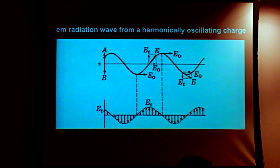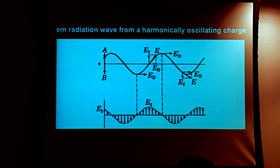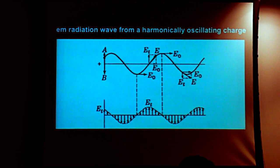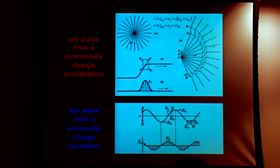If we consider not just a pulse of acceleration but an oscillation — which always involves acceleration, since acceleration is a change in speed and/or direction — in oscillatory motion we must decelerate to zero at one end, increase speed, and decelerate again at the other end. So it's a constant alternation of acceleration of the charge. An oscillating charge gives not just a pulse of radiation but a wave of radiation, again due to acceleration of charge.